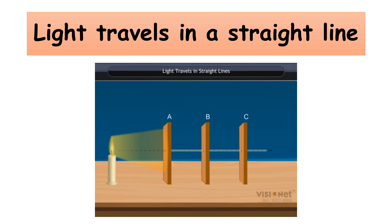Now, change the position. Displace cardboard B sideways. Again, look from the side of cardboard C. You notice that the candle flame is not visible.